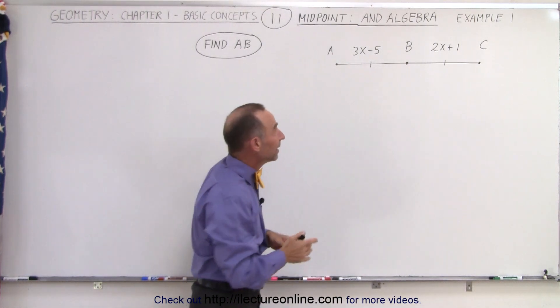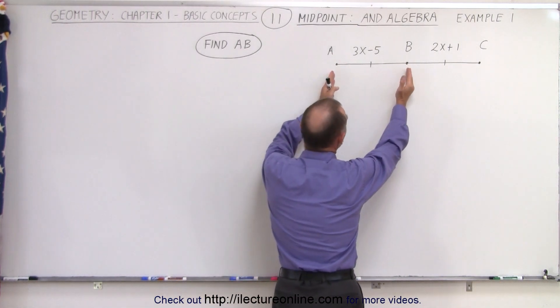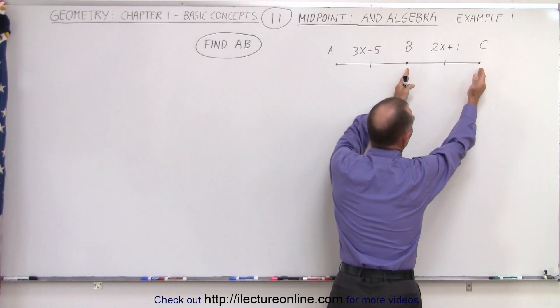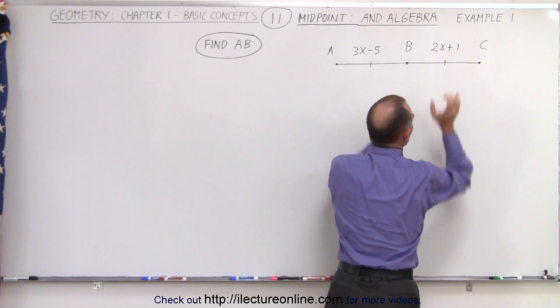In addition to that, they express the length of line segment AB as 3x minus 5, and they exhibit the length of segment BC as 2x plus 1.